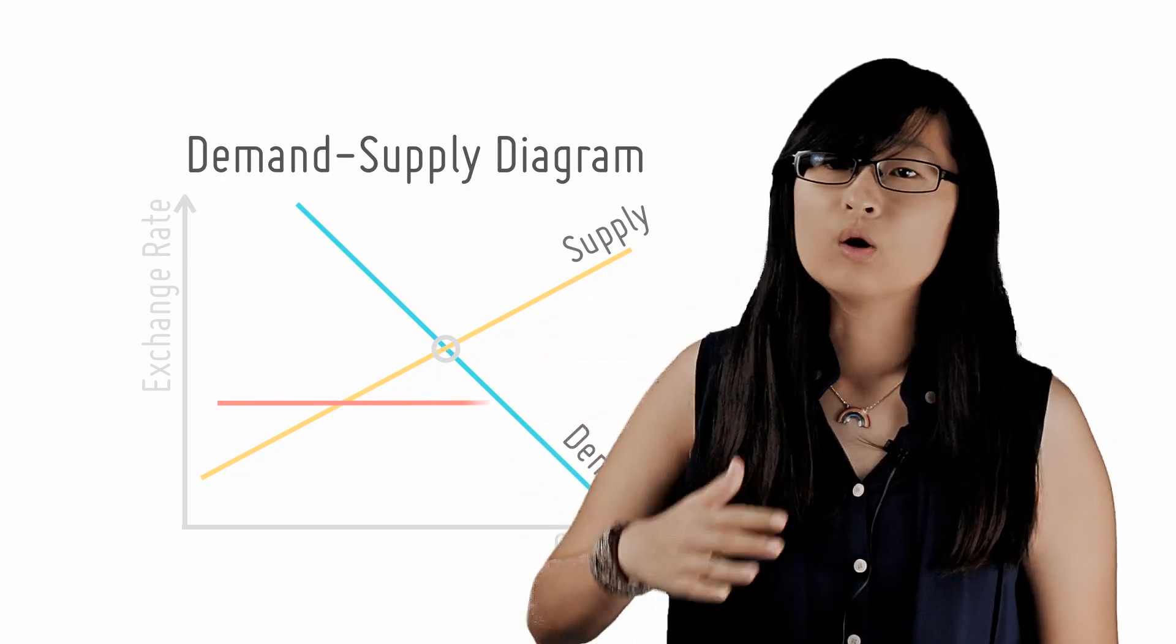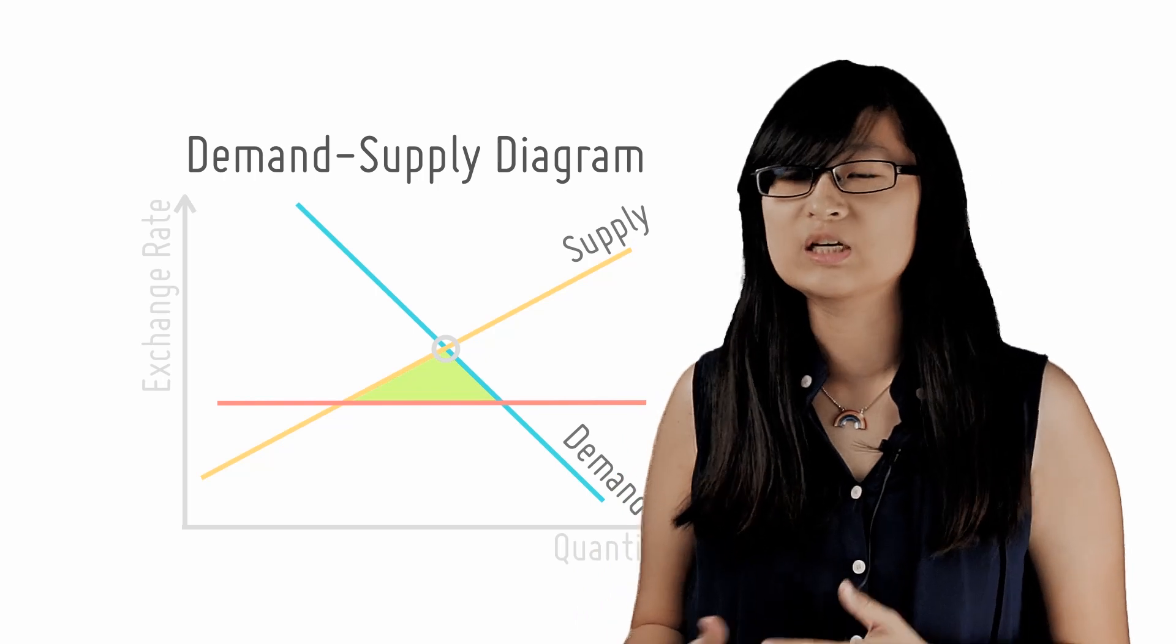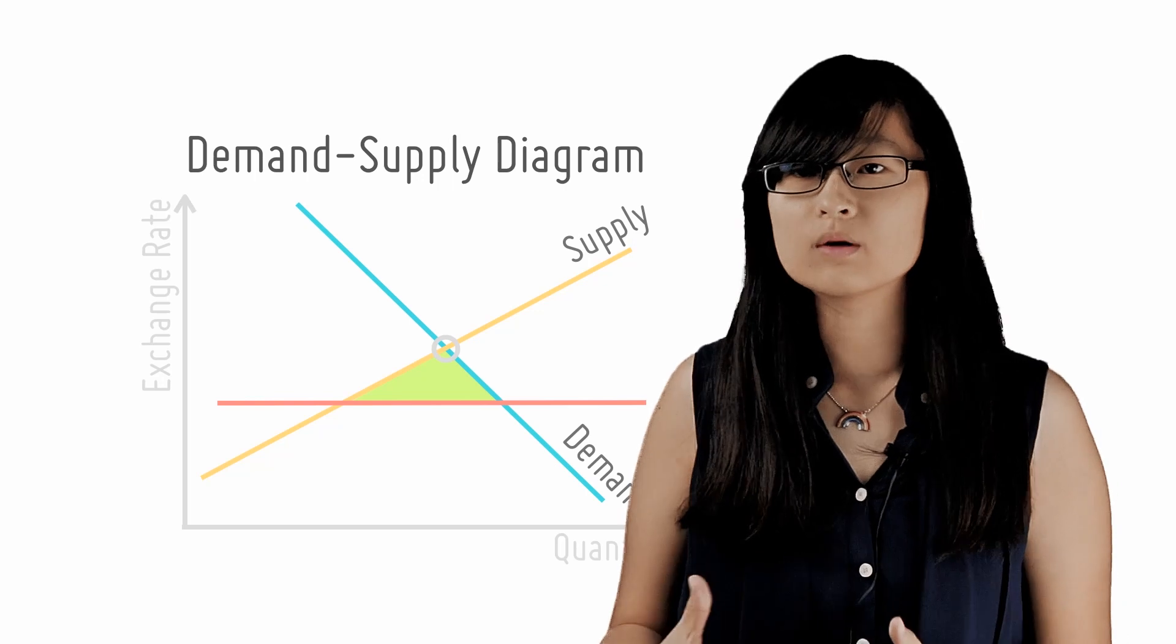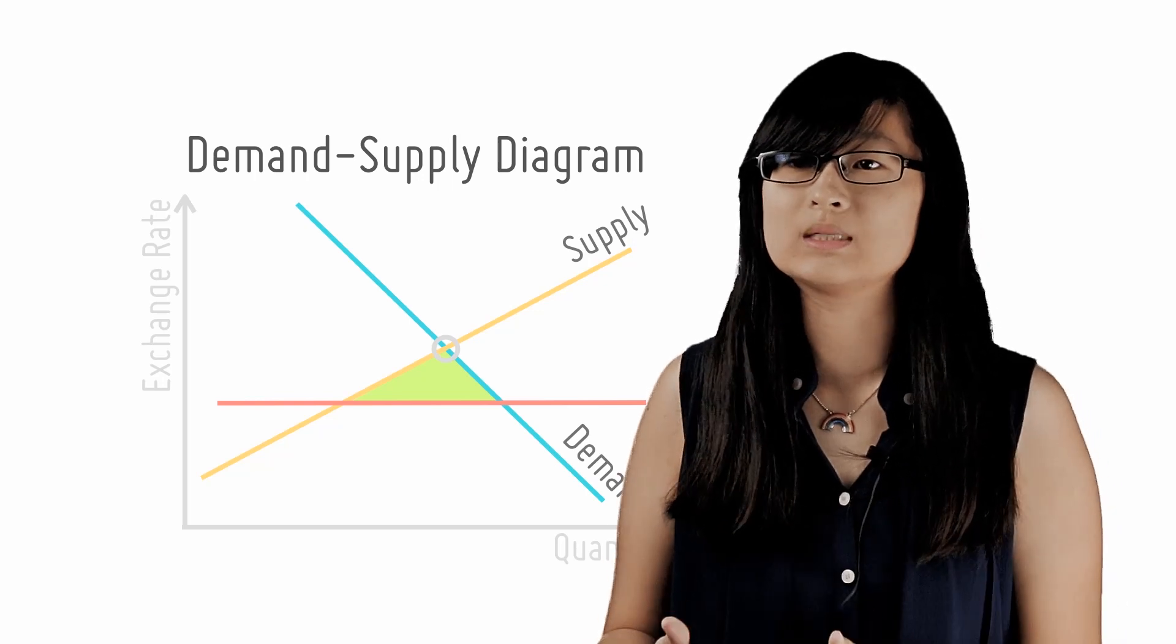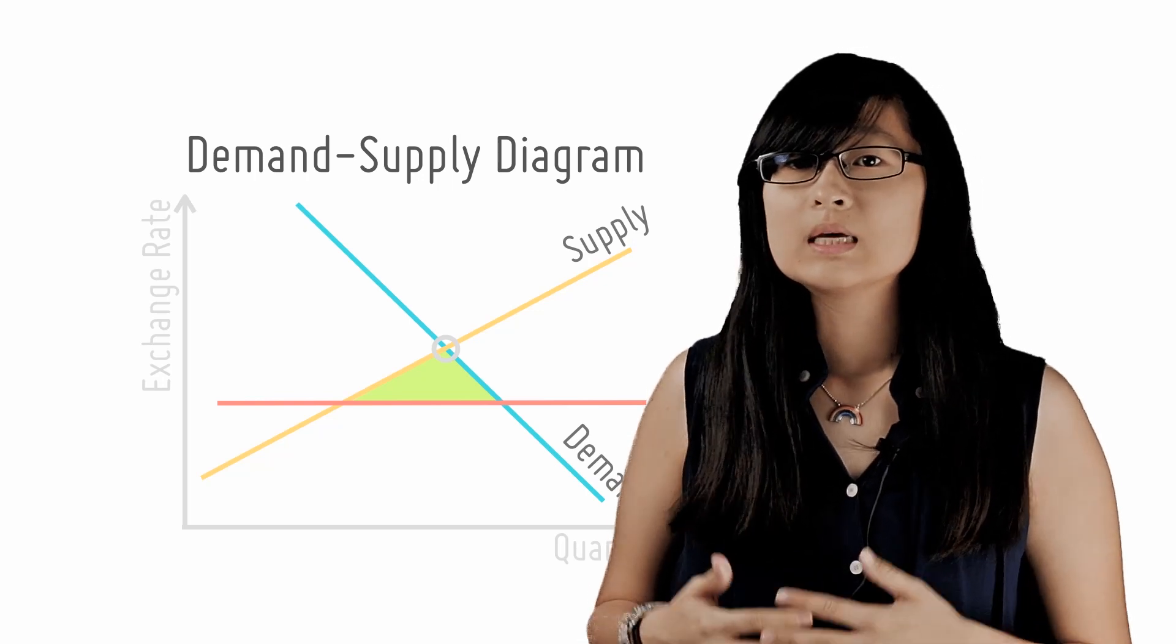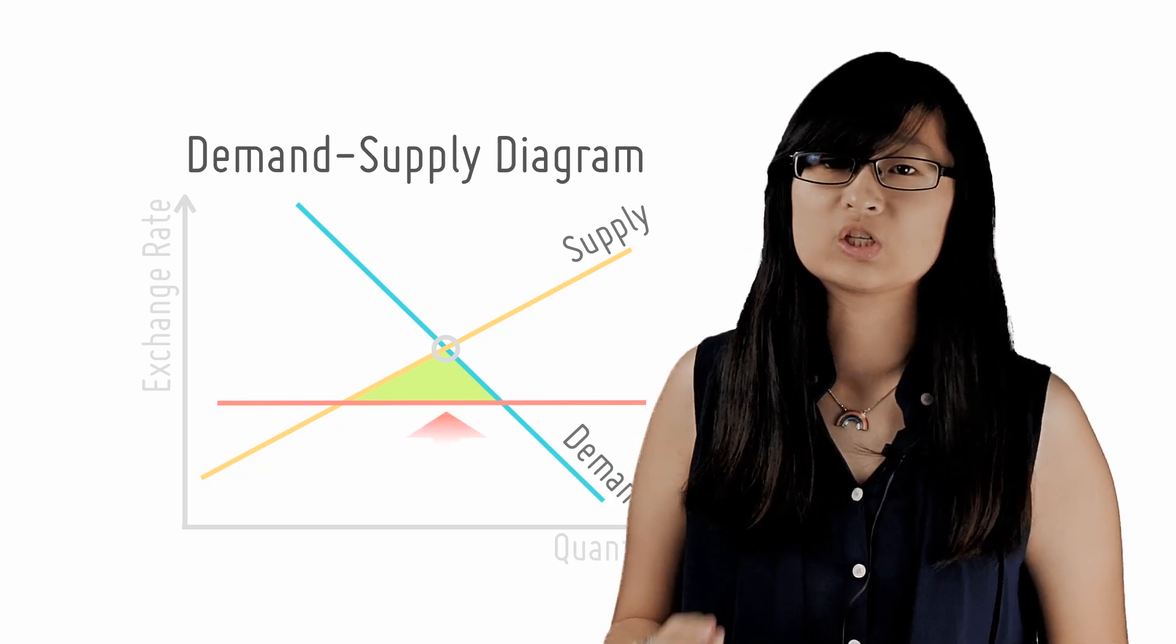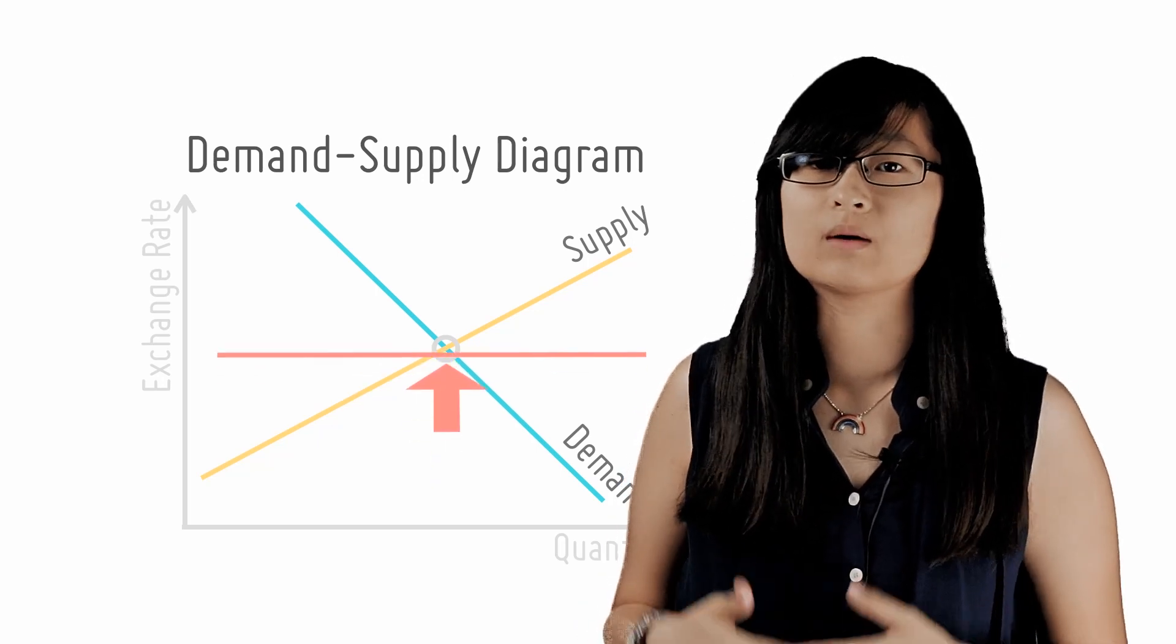If the exchange rate were below the equilibrium price, the adjustment process is actually quite similar. We see that there is a shortage of Singapore dollars. So people who are short of Singapore dollars are willing to give up more USD in exchange for Singapore dollars. This causes the Singapore dollar to exchange for more USD and the exchange rate appreciates.